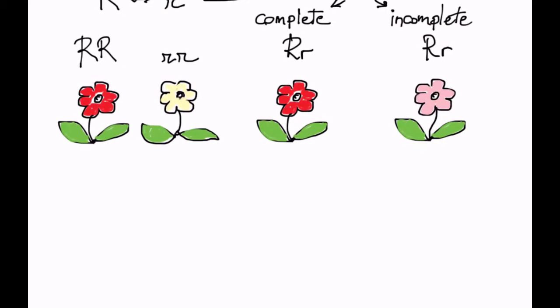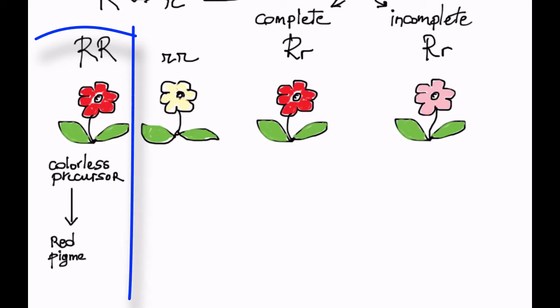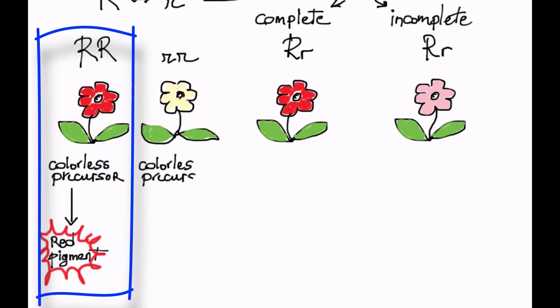The explanation for this is clear if we look at the molecular mechanism underlying each dominance type. Let's start with the big R, big R parent. In its flower, a colorless precursor is converted into a red pigment called anthocyanin by an enzyme encoded by the R gene.